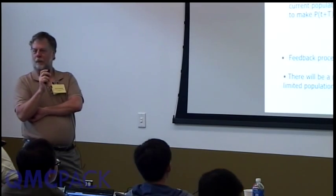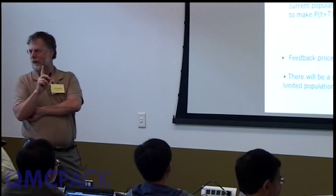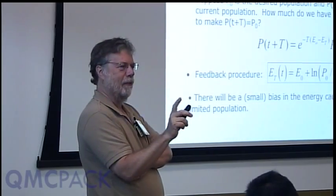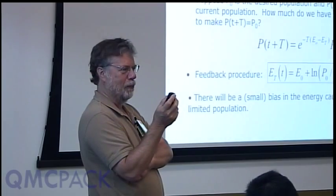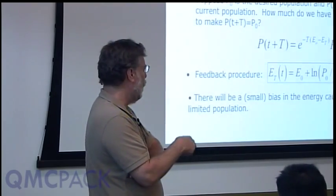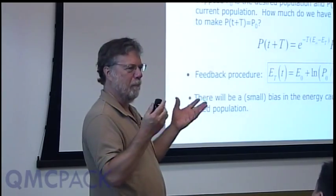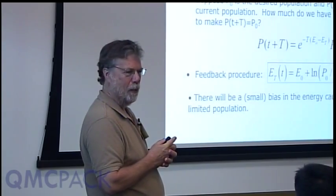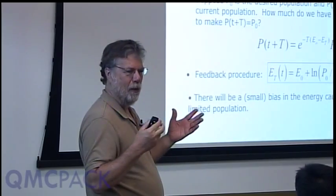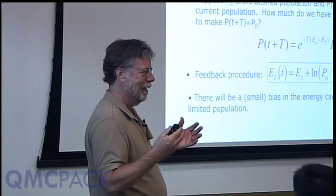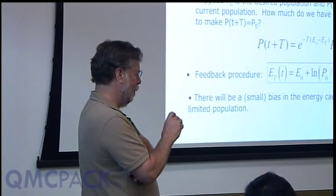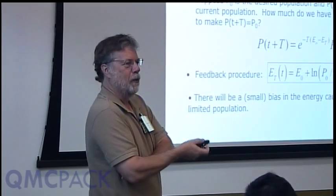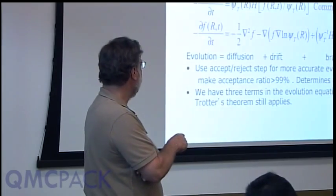You don't want to micromanage your walker population — keeping it exactly at P_0 produces the largest bias. You want T as large as possible without catastrophic failure (walkers going to zero or exploding to a million). A good rule of thumb is to allow the population to fluctuate by about 20%, since those fluctuating walkers still provide useful statistical information.